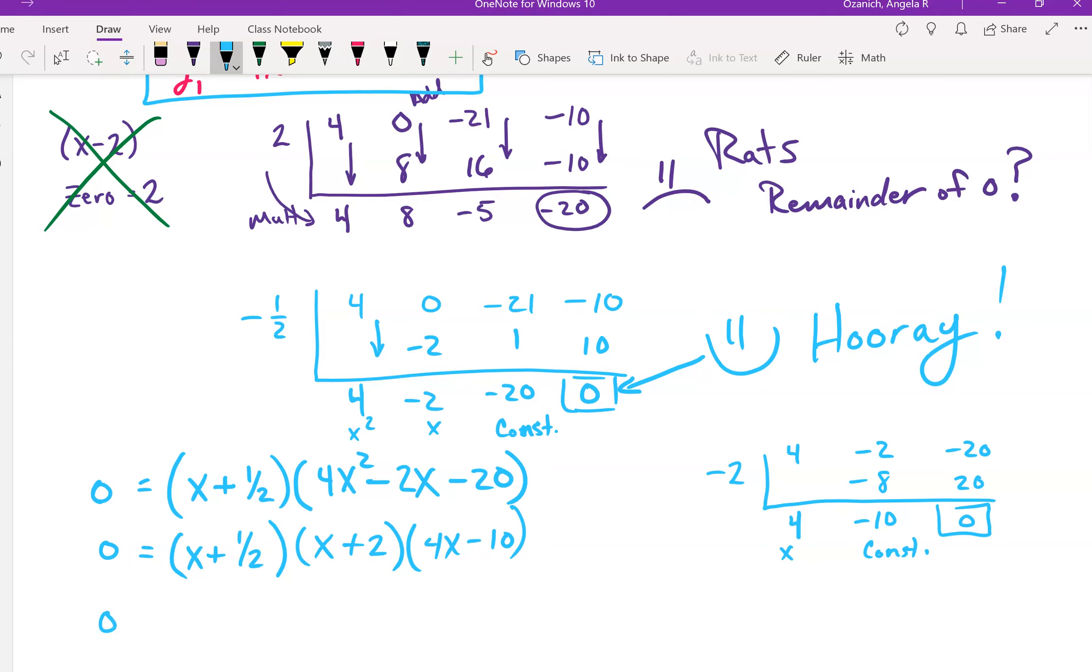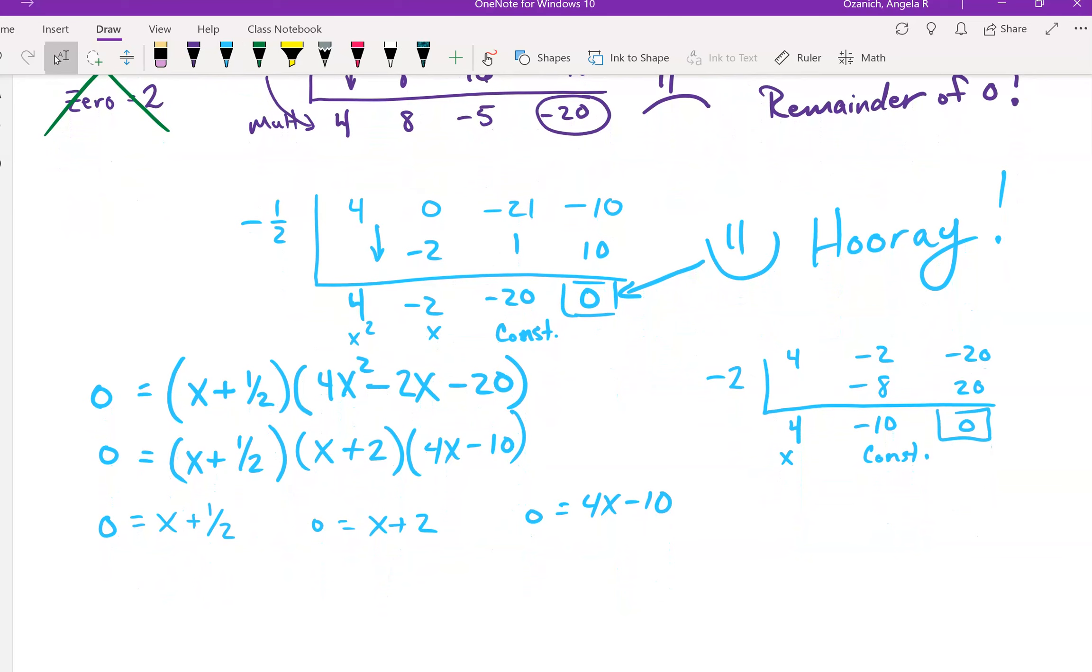So now I have x plus 1 half times x minus a negative 2, so plus 2. And my last zero is right here, constant and an x term. So it's 4x minus 10. Now you could have come up with this exact same result if you factored, which is totally fine. Sometimes this result, this quadratic, will result in imaginary solutions, in which case we'll have to use the quadratic formula. We'll practice that this week. But our zeros, take a look at what our zeros are going to be. Because 0 is equal to x plus 1 half. And we're going to set 0 equal to x plus 2. And we're going to set 0 equal to 4x minus 10. The places that you should see your graph crossing are at negative 1 half, negative 2, and if we add 10 and divide by 4, 10 fourths or 5 halves.